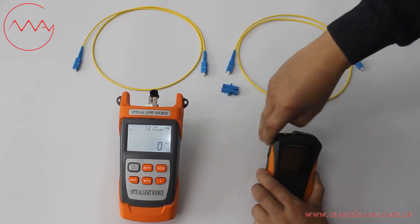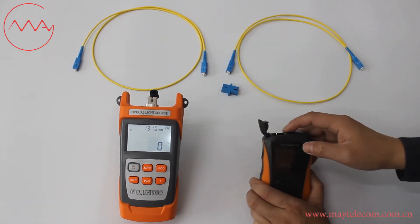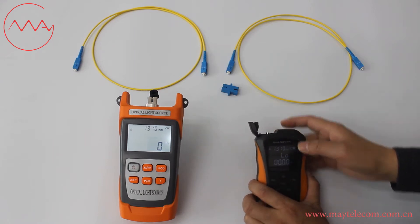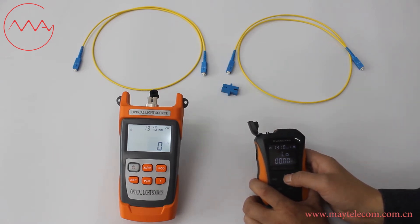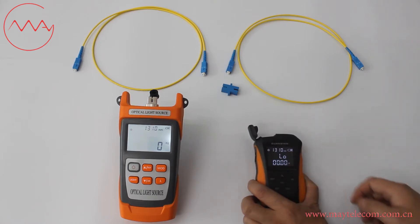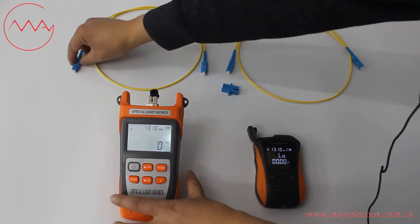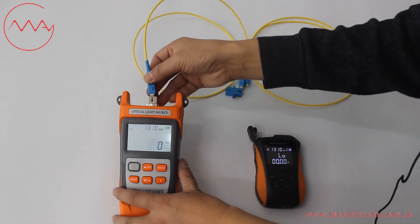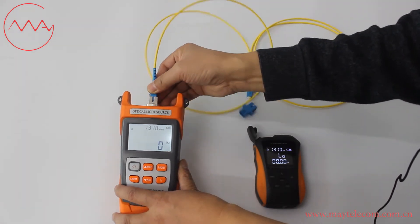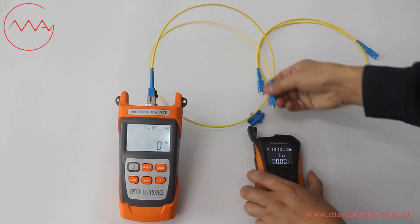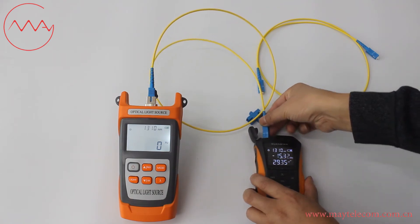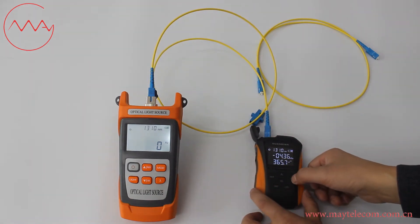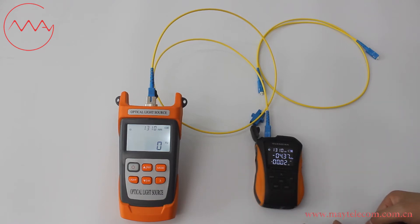For the OPM insertion loss test, open the dust cover of the OPM port. Press the Wavelength button to select the same wavelength as that of the optical light source. Insert the reference patch code into the optical light source and the optical power meter. Press the dB button to set the reference value.